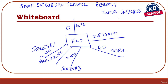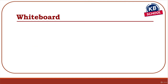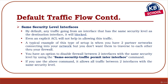Be aware: the 'same-security-traffic' command is global, so it applies to all same-security interfaces. You can't selectively allow it for some pairs but not others. If you had partner1 and partner2 at the same level and used this command, they'd be able to talk to each other — you'd lose that separation. You do still have the ability to use an ACL to control traffic between same-security interfaces, but by default when the command is enabled, all traffic is allowed between them.